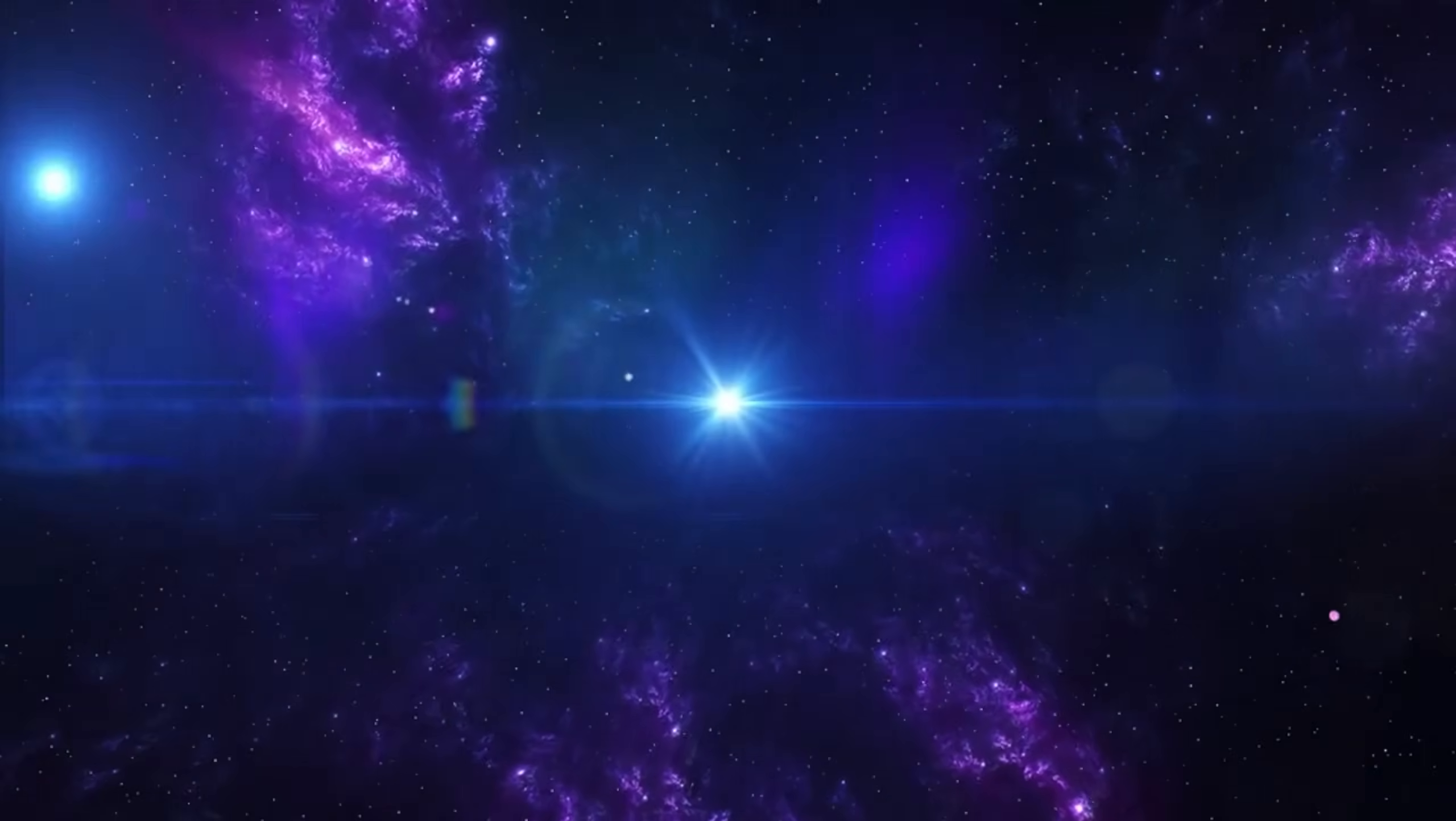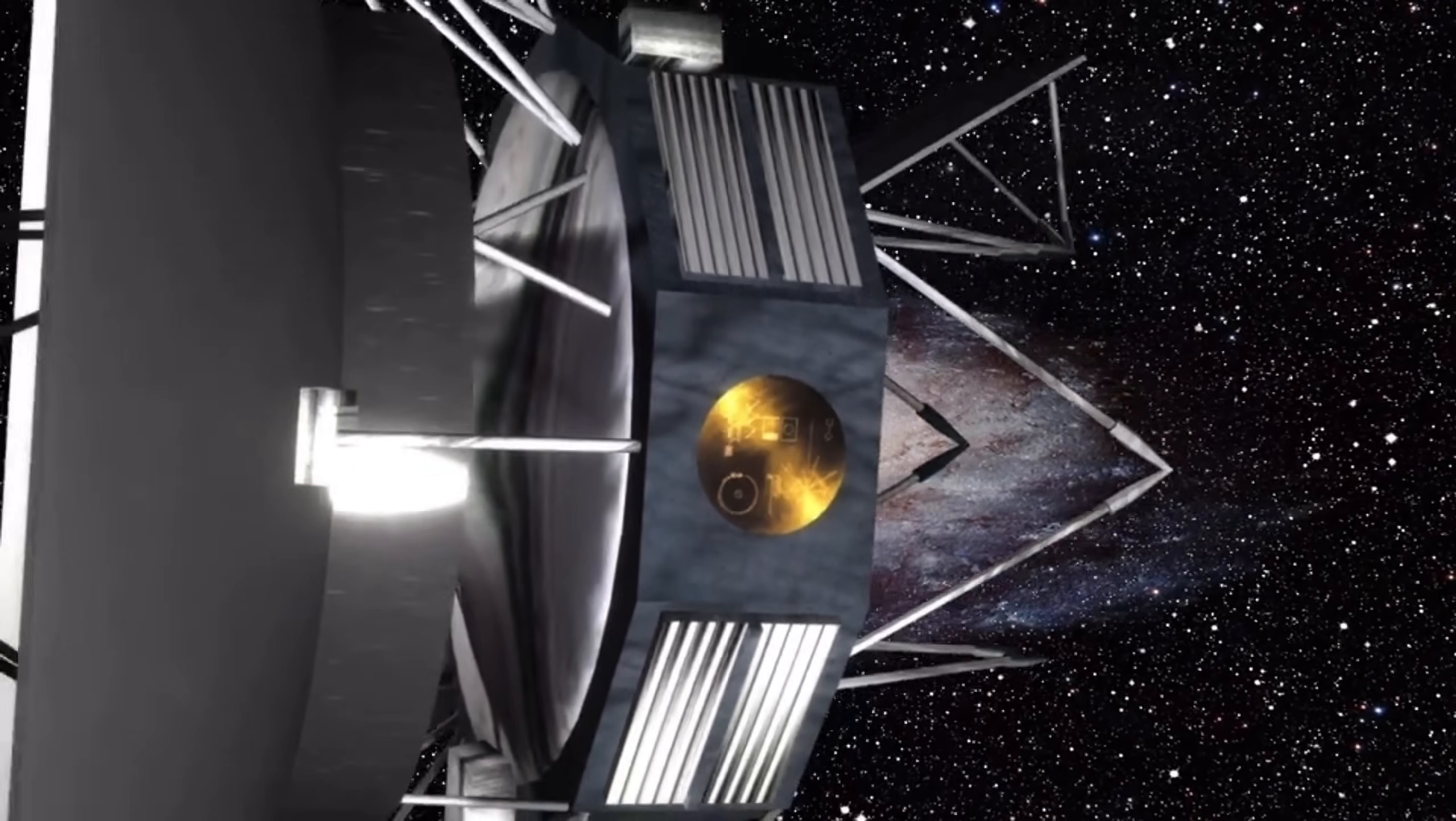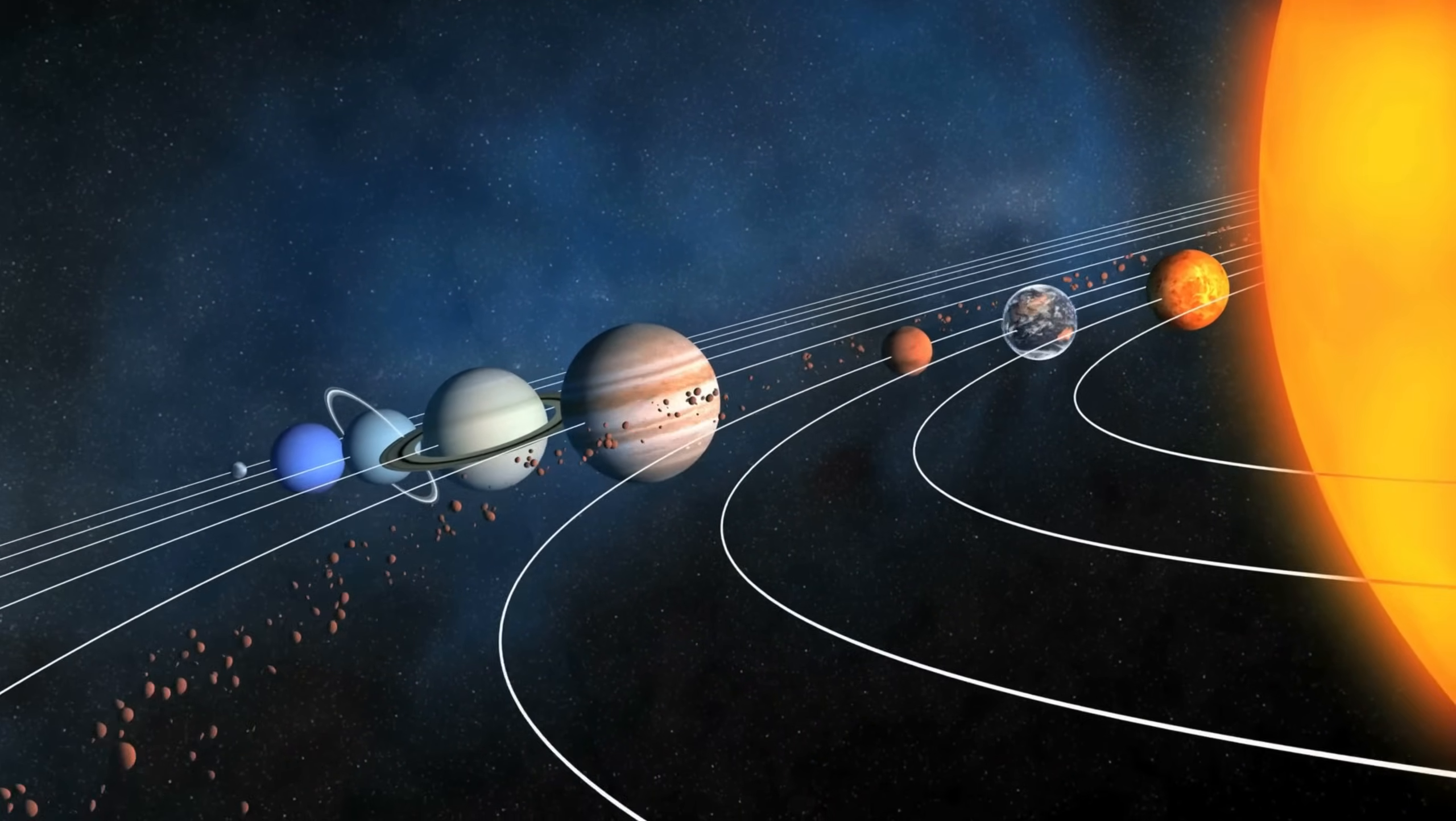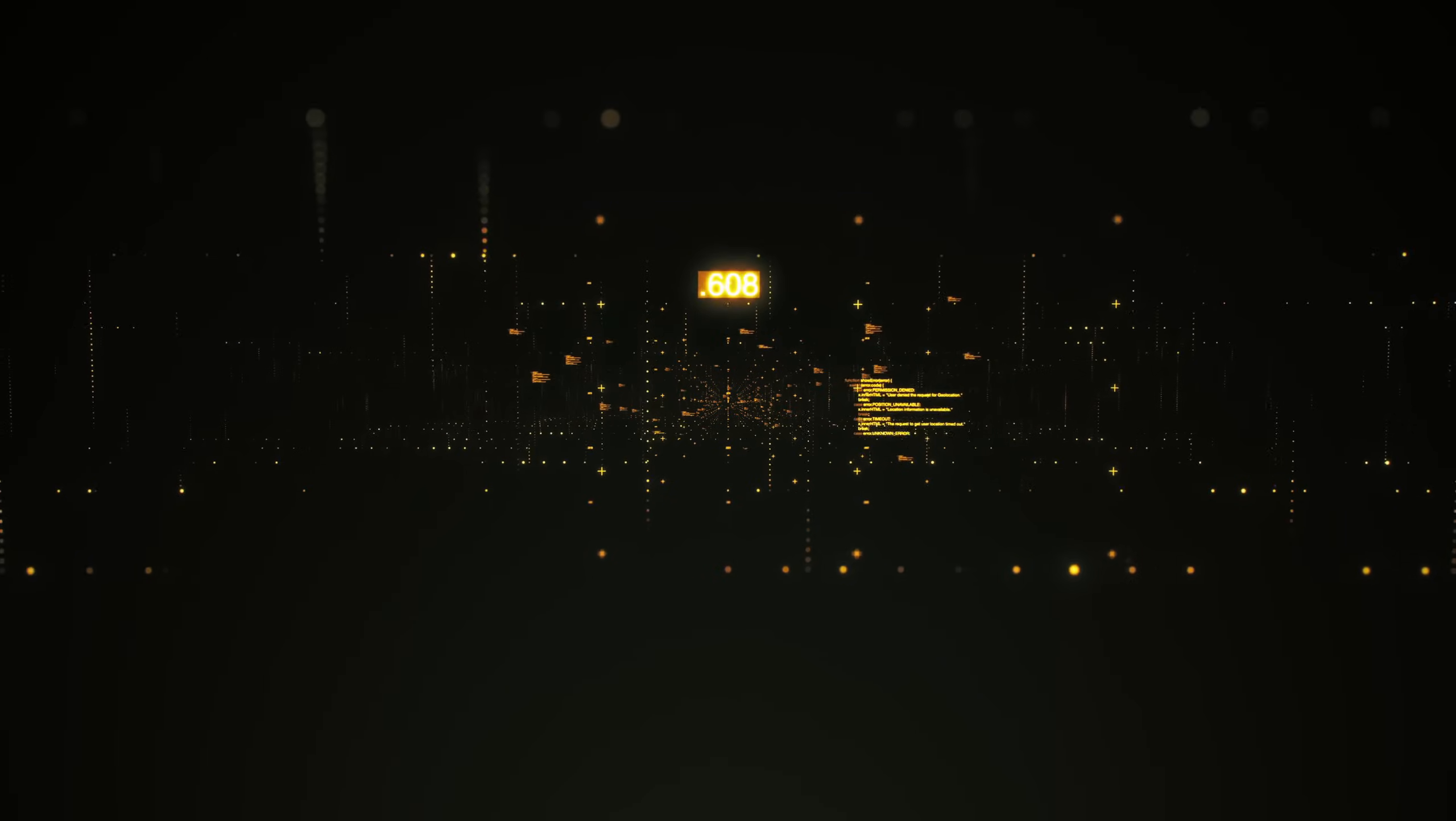While both Hubble and JWST employ cutting-edge imaging and spectroscopy, Voyager's instruments were mainly built for solar system exploration, emphasizing magnetic fields, cosmic rays, and plasma interactions over imaging. Though Hubble and JWST are expected to operate for many years within the vicinity of Earth, Voyager has traveled farther than any other spacecraft, leaving a lasting legacy in solar and interstellar science that will continue well beyond its power supply.